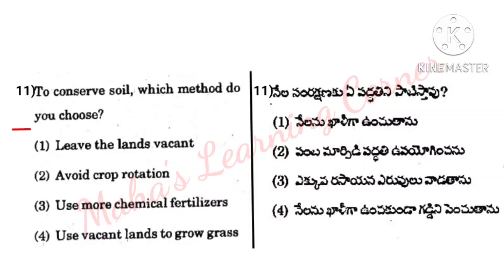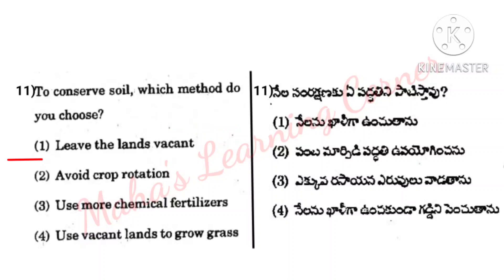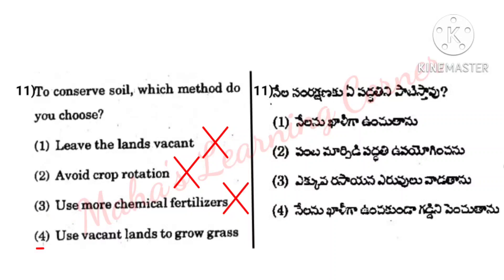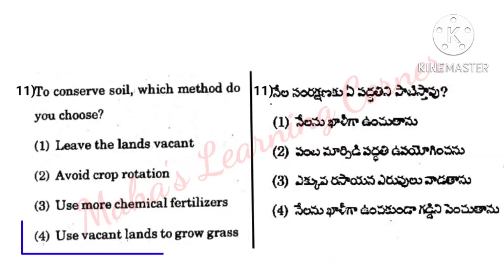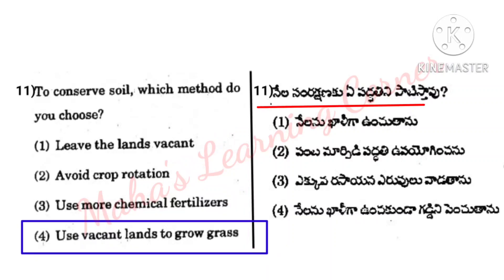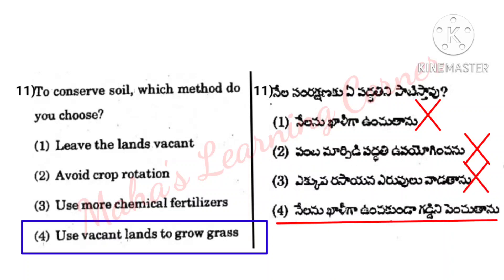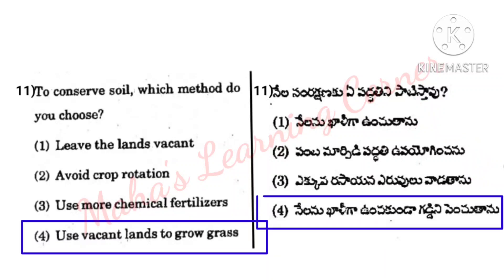Question: To conserve soil, which method do you choose? Options: Leave the lands vacant (wrong); Avoid crop rotation (wrong); Use more chemical fertilizers (wrong); Use vacant lands to grow grass (correct). Option 4 is the correct answer — growing grass on vacant land helps conserve soil.